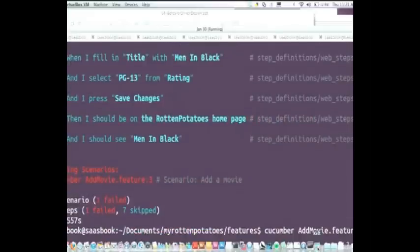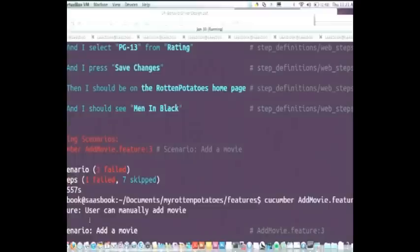Cucumber add features. So you can see this time one failed. And it skipped them all. The first one failed. It skipped in the eight steps. It said it took one and a half seconds. Seems to be taking more. Alright.